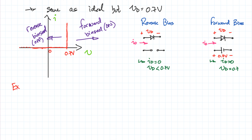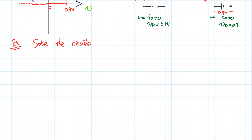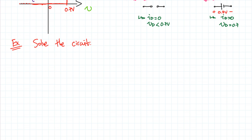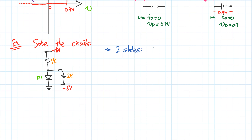Now we're going to solve the exact same example from the previous ideal diode video, just to see how the process changes. For more in-depth examples using this model, links are in the description box. These problems can become fairly involved — as discussed with the ideal diode, the number of diodes governs the number of possible states, and complexity increases accordingly. The diode has two possible states: on or off.